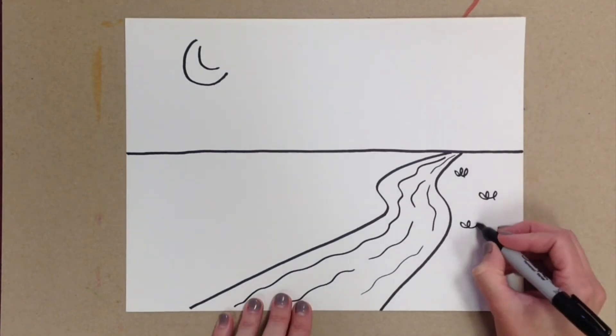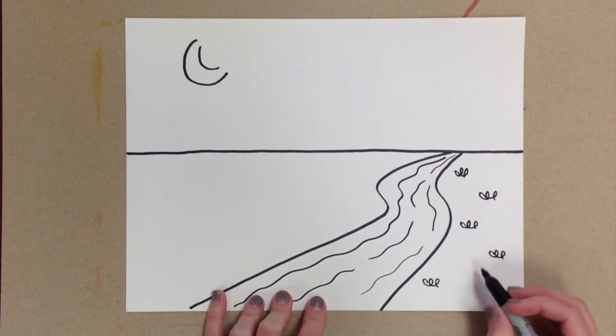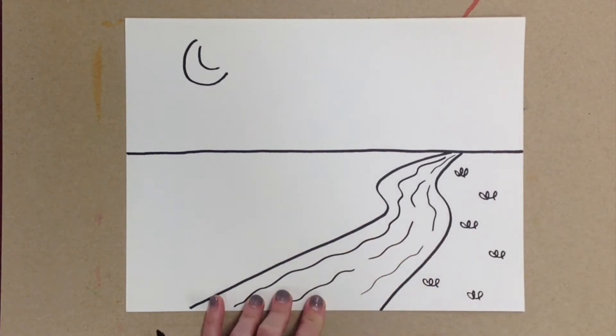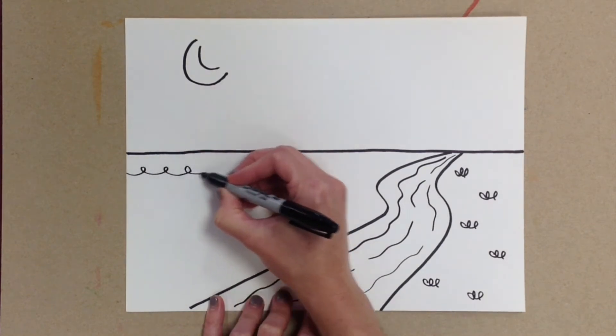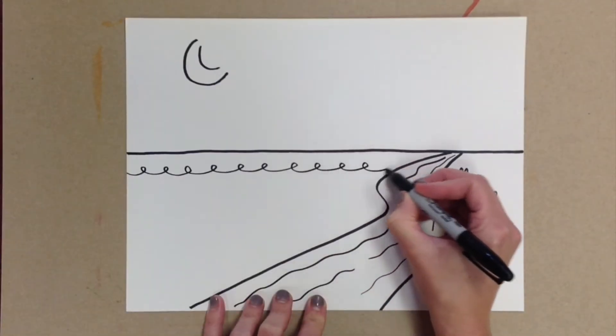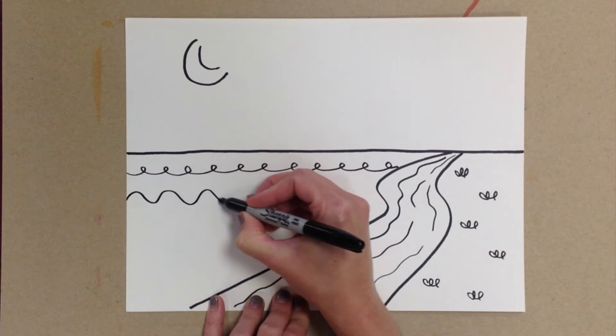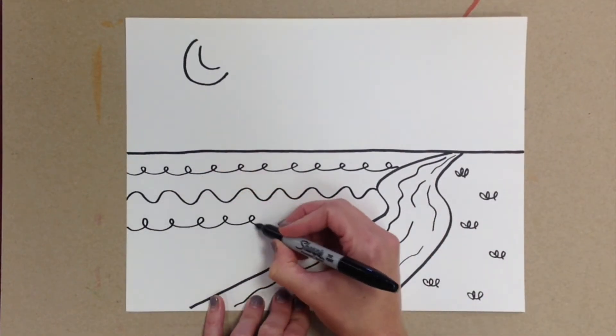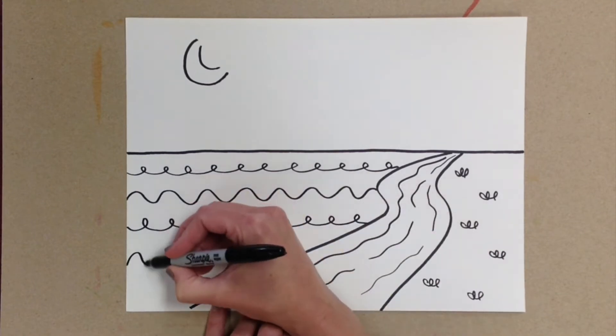I'm going to use some short curly lines for grass and flowers. Now I'm going to make some long wavy and curly lines to show more texture and grass on the other side. Just get creative. If you run out of ideas, simply fill the space with more lines.